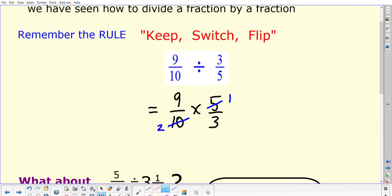We can also cancel between the 3 and the 9. So 3 into 3 is 1, 3 into 9 would be 3. That would leave us with on the top 3 times 1 which would give us 3, and on the bottom 2 times 1 which is 2.